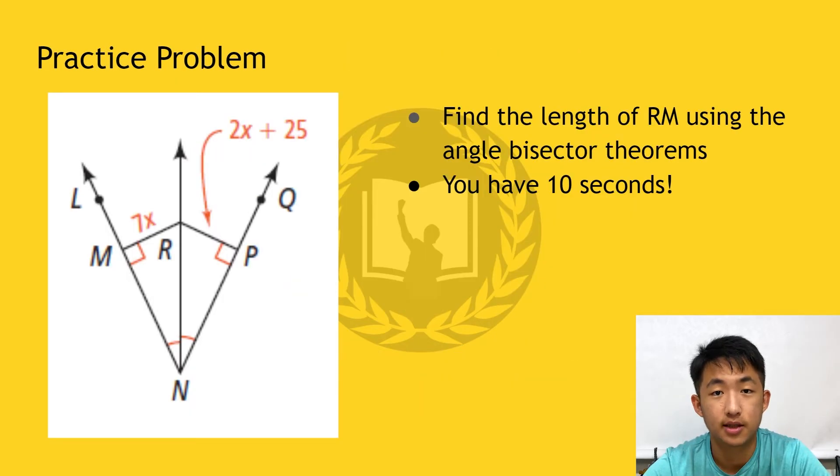This problem is asking us to find the length of RM. It's also given that RM is equal to 7x, while RP is equal to 2x plus 25. Use the angle bisector theorems to find the length of RM. You have 10 seconds. Time starts now.